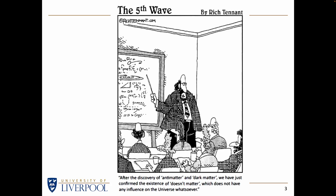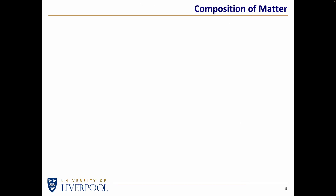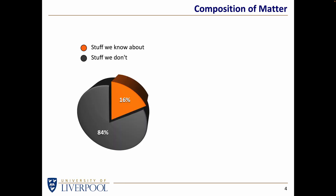I hope to convince you this evening that dark matter does indeed have an influence on the universe. When we think about the composition of matter, we've come to the conclusion that all the matter in the universe can be divided into the stuff we know about and the stuff we don't. The stuff we know about is only about 16 percent of the total. So what is that 16 percent?